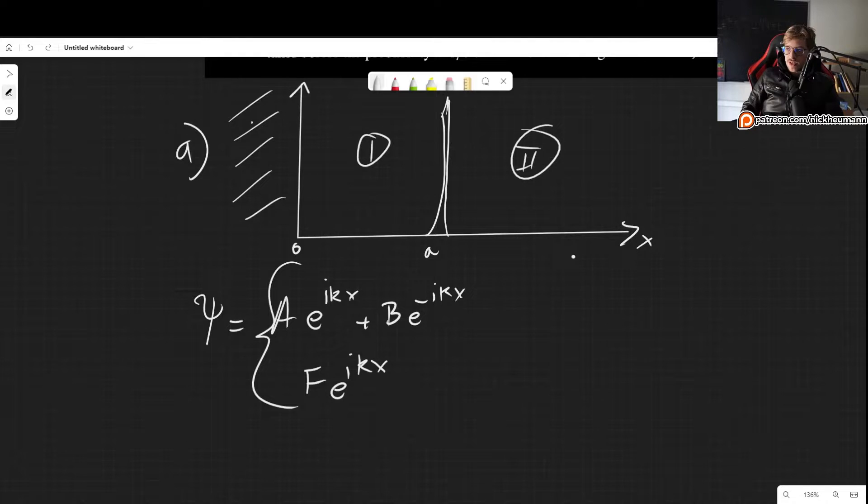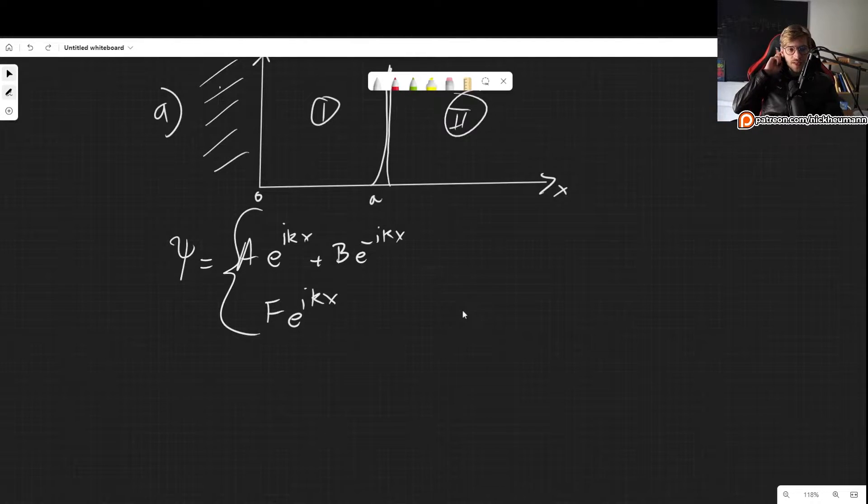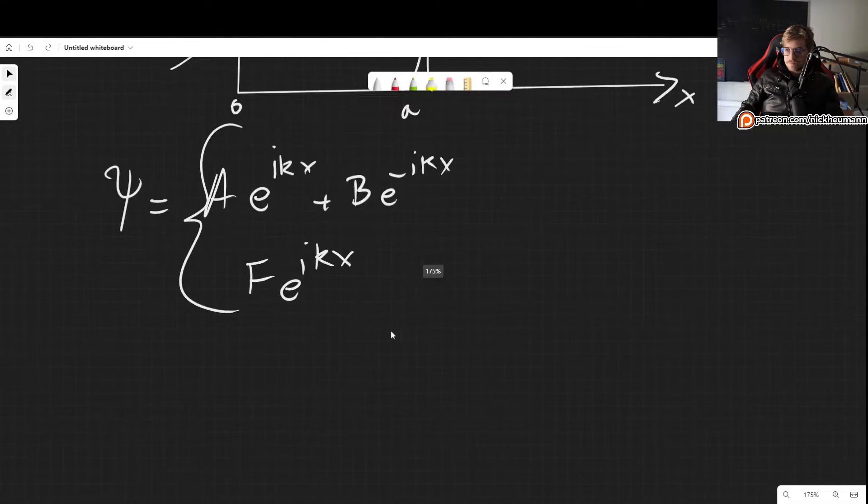And for region 2, we get the same thing, except that we only have a wave traveling to the right. There is no wave traveling to the left, of course, because where would it even come from, right? So that is the solution, as we have seen many times before. If you're unsure where that came from, you should go back a few videos where we discuss this in more detail.